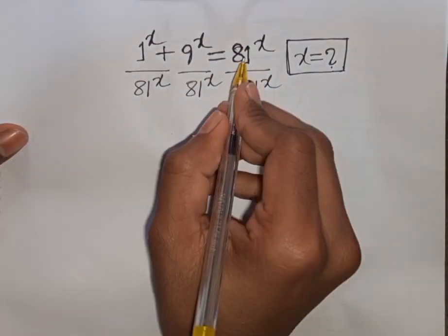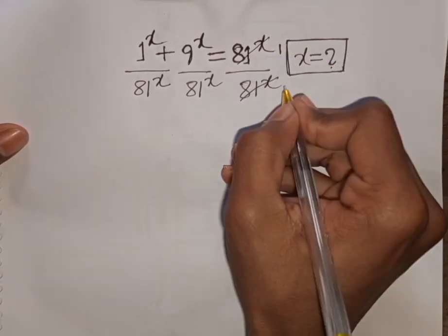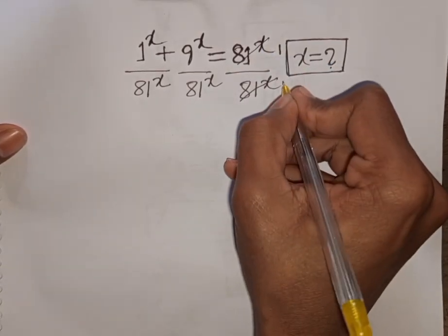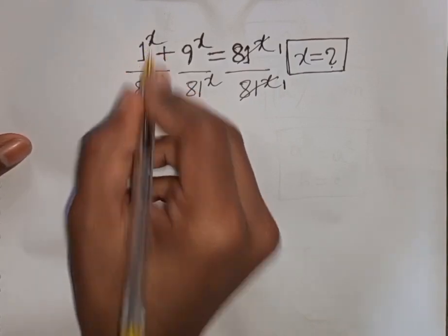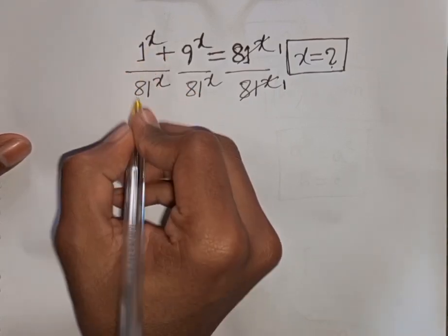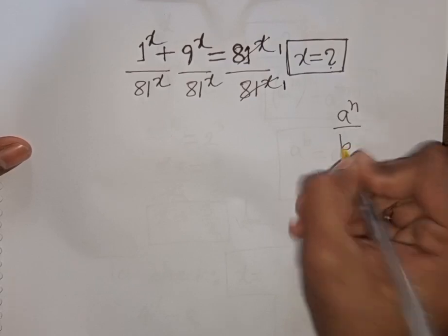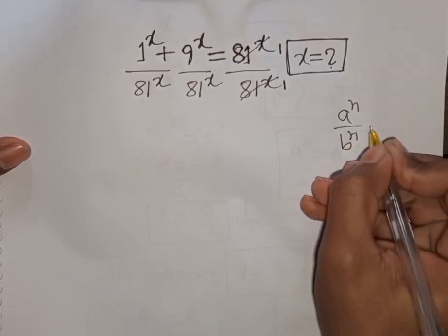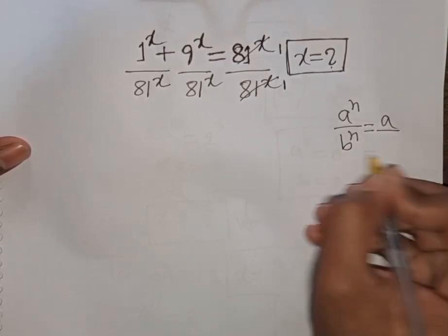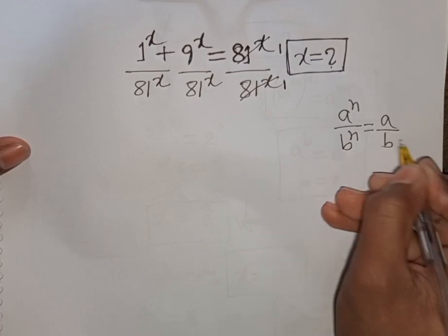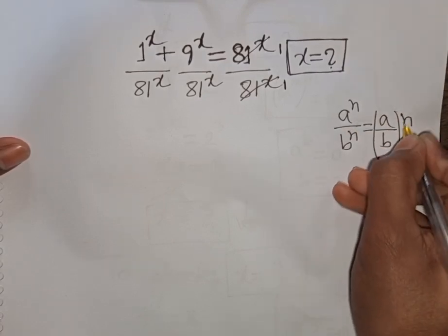Now we see this will be cancelled, so here we get 1 and 1. We have the same power but different base. According to the formula, a power n over b power n is equal to (a over b) to the common power n.